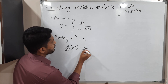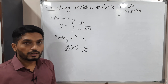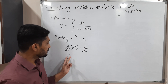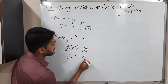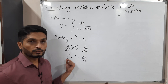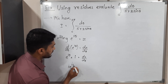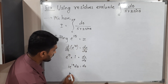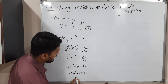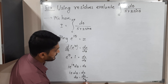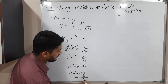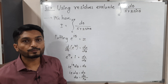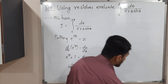Differentiating e^(iθ) = z with respect to θ: the derivative is i·e^(iθ) dθ = dz. Since e^(iθ) = z, this becomes iz dθ = dz, so dθ = dz / (iz). This is the value of dθ in terms of z.